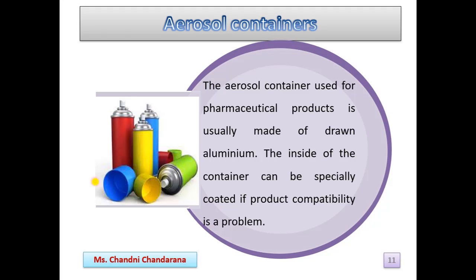Aerosol containers used for pharmaceutical products are usually made of drawn aluminium. The spray nozzles are designed to allow a specific dose to be dispersed with each spray. The inside of the container can be specially coated if product compatibility is a problem. A length of polyethylene tube — known as a dip tube — is attached to the inside of the spray nozzle and dips into the product, drawing product into the spray nozzle when the sprayer is activated.